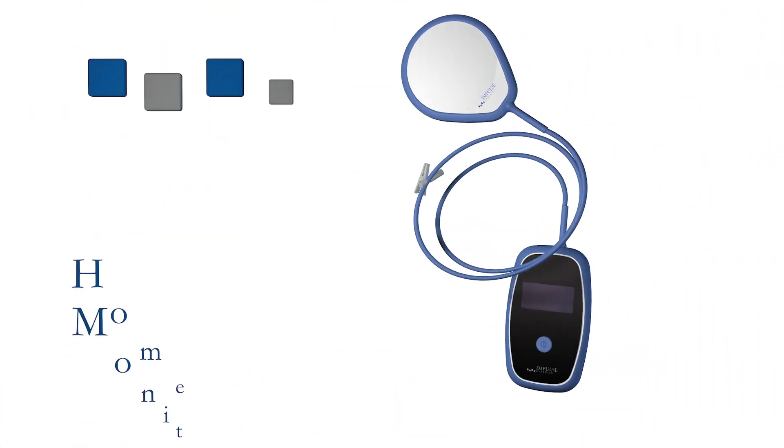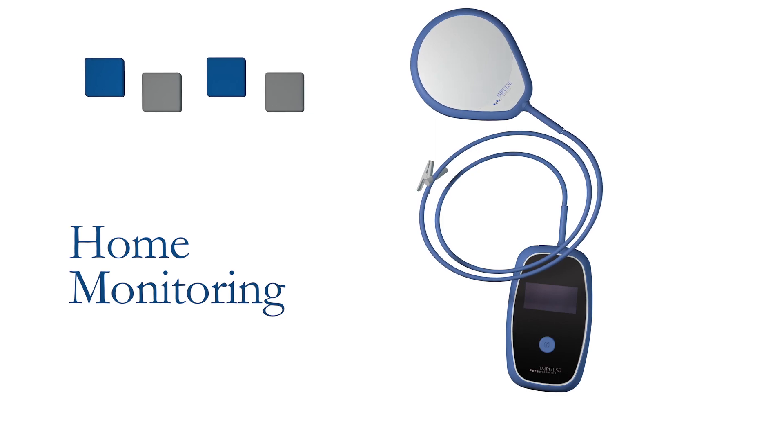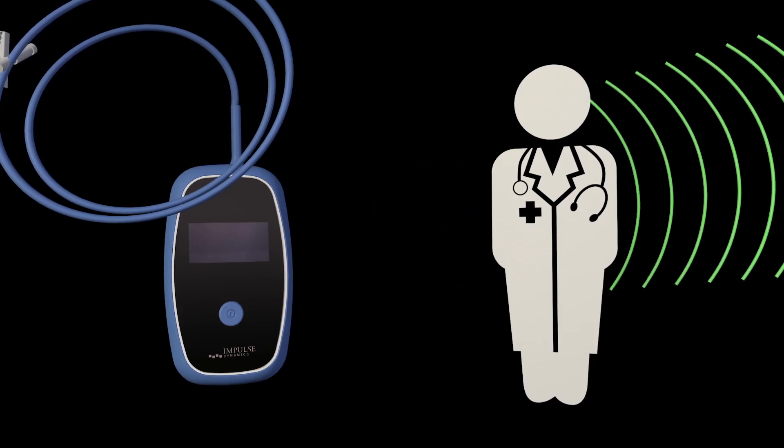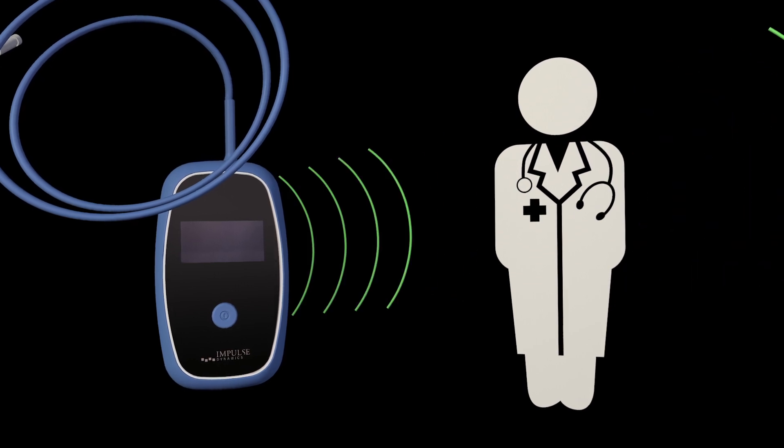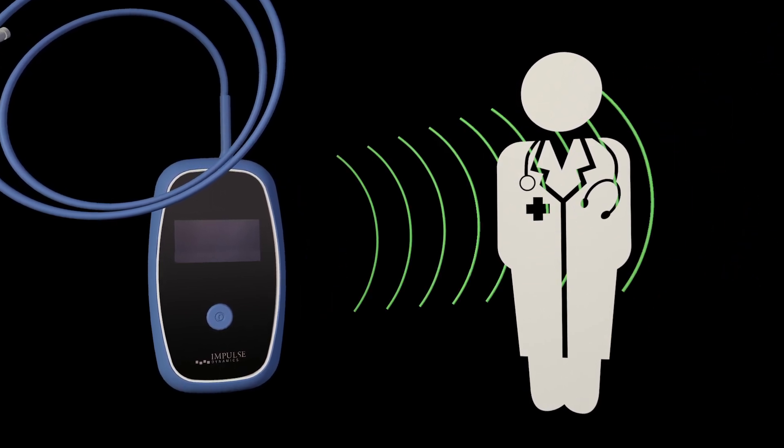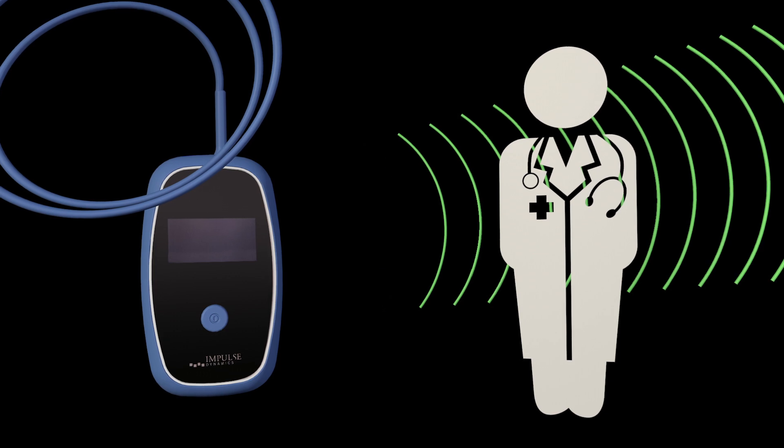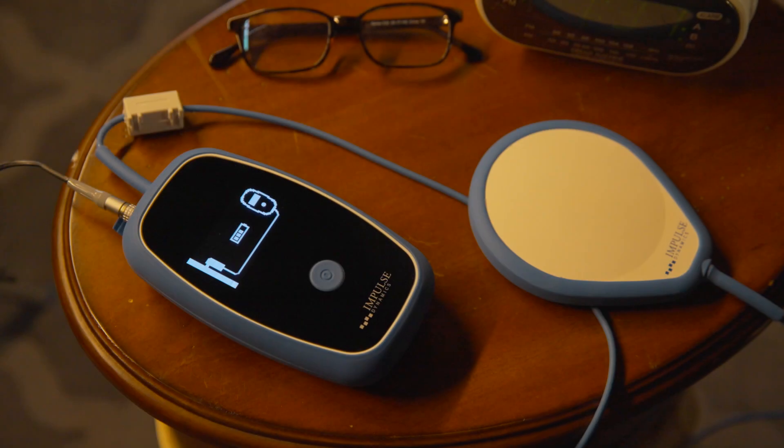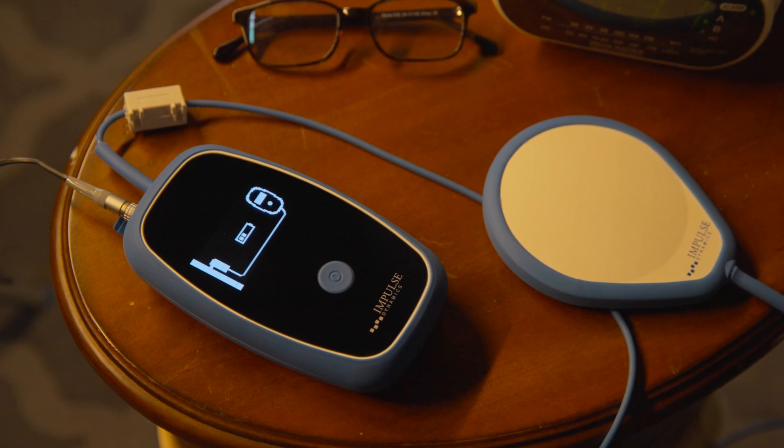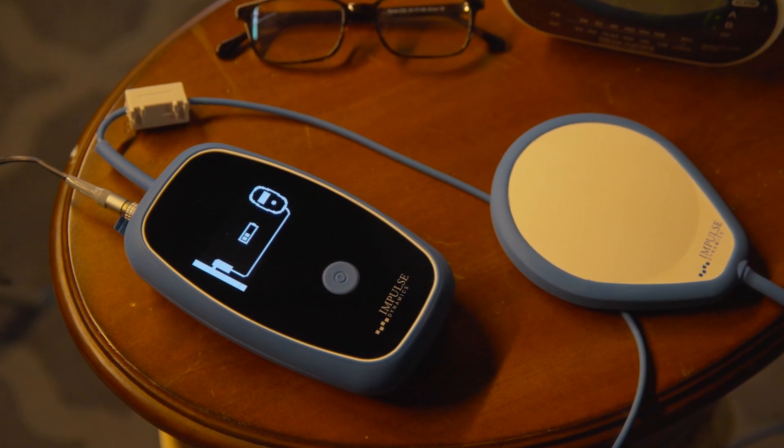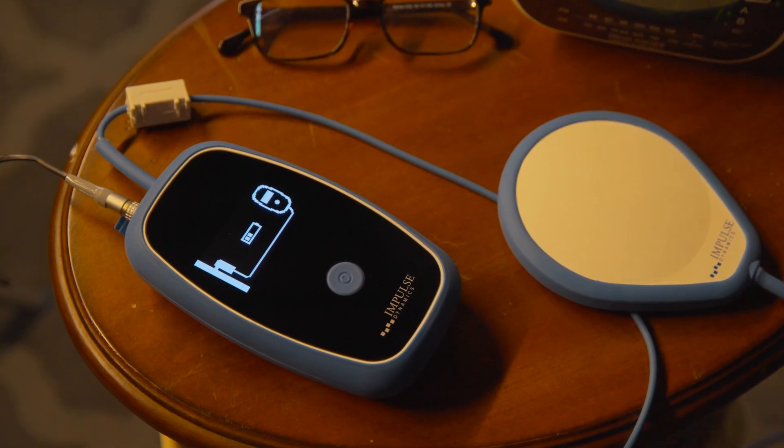Home monitoring. Your charger may be equipped with a cellular modem that automatically communicates essential information about your Optimizer to your physician. To do so, your charger must be stored on your bedside table and plugged into the wall, and have a strong cellular signal when not actively charging your Optimizer.